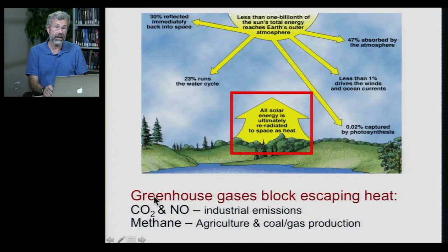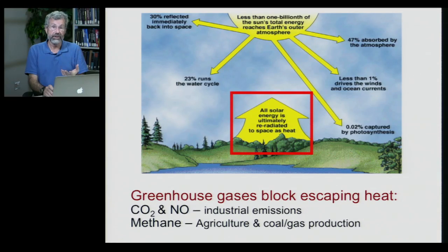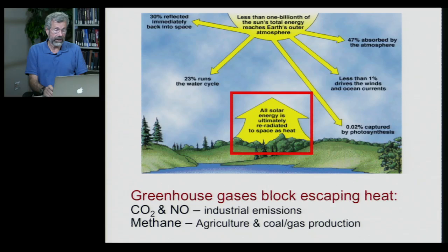Carbon dioxide is the most abundant greenhouse gas being produced by human activities, along with nitrous oxide. Another very powerful greenhouse gas is methane, which is being produced by agriculture and also in the production of coal and gas. We want to look at what happens when we add too many of these into the air.